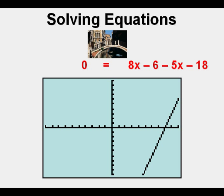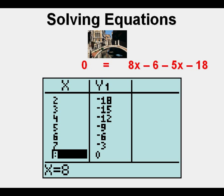It looks like the line crosses at 8, meaning the value of x is 8. We check out the table view by pressing second, then graph. Then we scroll down to see where x is 8. We see that when x is 8, y is zero.